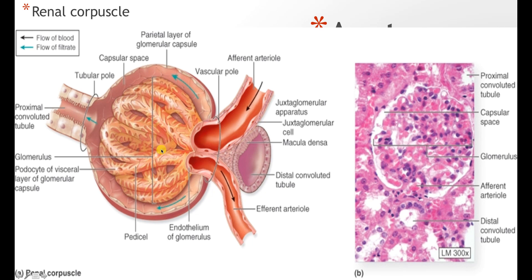To drive filtrate toward the proximal convoluted tubule, there must be pressure in the glomerulus. This pressure is created because the afferent arteriole has a larger diameter than the efferent arteriole, causing more blood to remain in the capillaries and increasing hydrostatic pressure. On the histological picture shown, you can identify the vascular pole — where the afferent and efferent arterioles are — and the urinary pole, where the proximal convoluted tubules begin. The distal convoluted tubules and macula densa cells are also visible here.